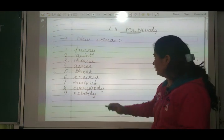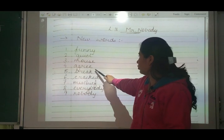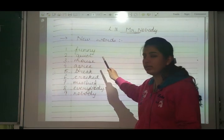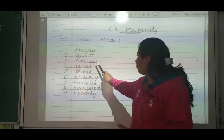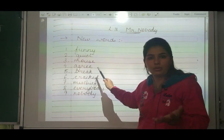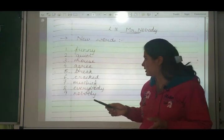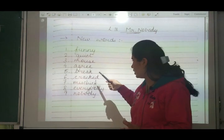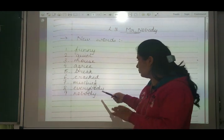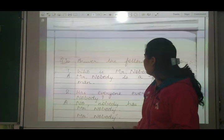New words: number one - funny, number two - quiet, number three - mouse, number four - agree. Funny means jo mazaakiya hota hai. Quiet yaani bilkul shant. Mouse - chuha. Agree means kisi se hum koi baat karate hain toh hum bhi agree hain ki haa ye mujhe sahi lagta hai. Break - toot jaana. Crack - ho jaana. Mischief - musti karna. Everybody means sab, nobody means koi nahi.